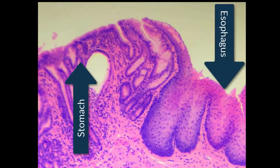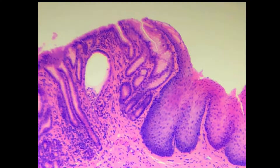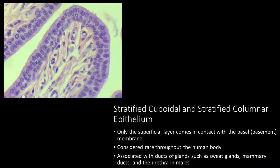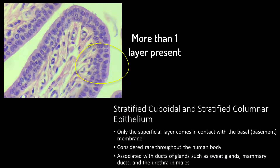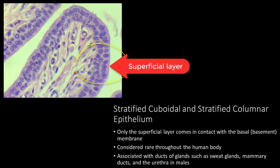In simple epithelium, all of the cells within the strata come in contact with the basement or basal membrane. Pay close attention as you view your slides to this arrangement. Within stratified epithelium, the cells are stacked and arranged in multiple layers. Only the deepest layer of the tissue comes in direct contact with the basement membrane; the additional layers do not.